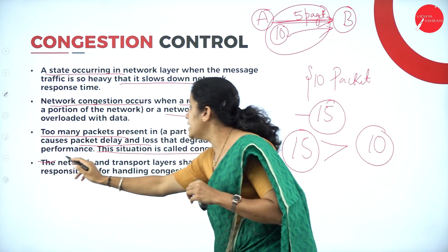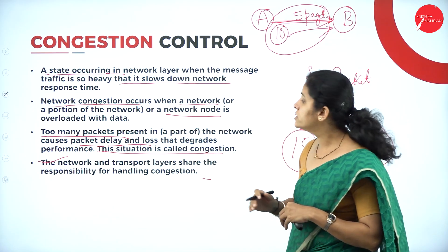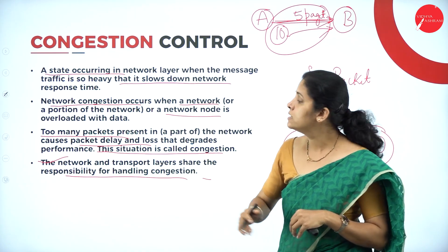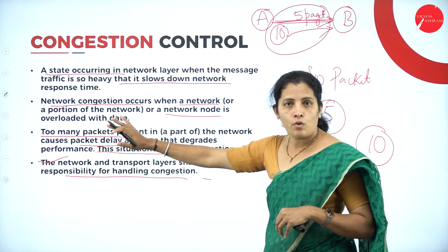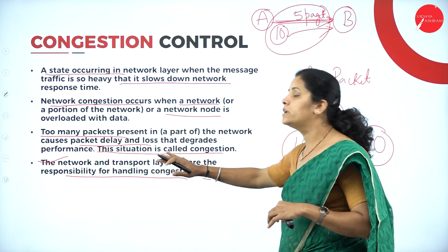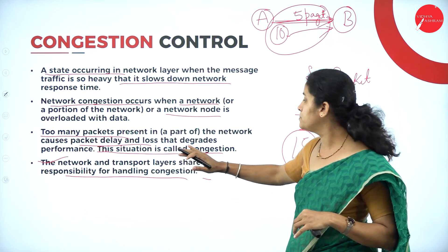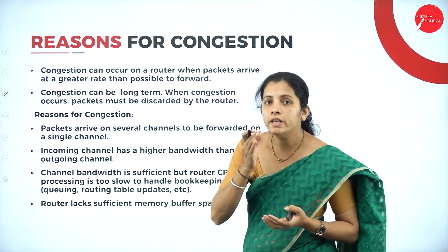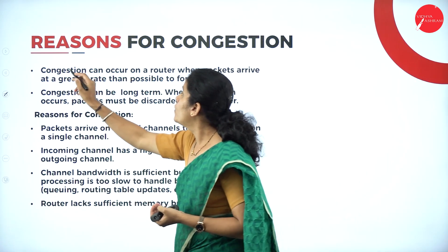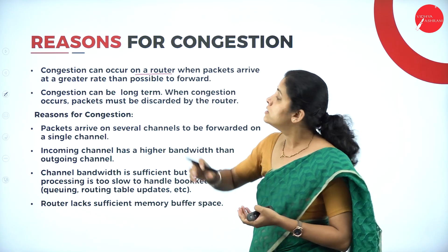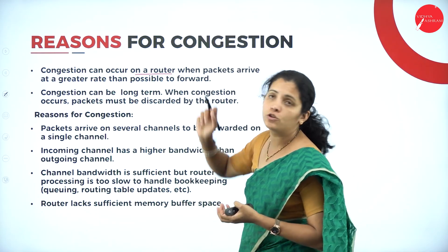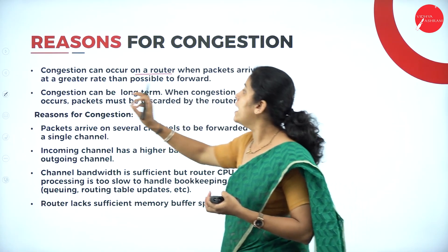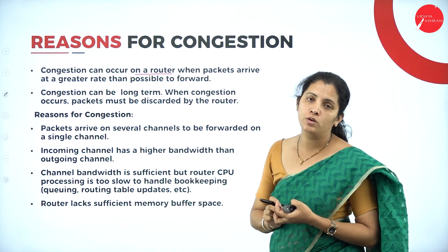The network and transport layer share the responsibility for handling congestion control. That means the network layer and the transport layer of the OSI reference model are both responsible for handling congestion. Congestion can also occur on a router when packets arrive at a greater rate than it is possible to forward.